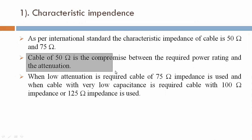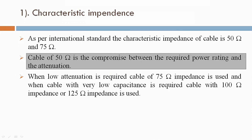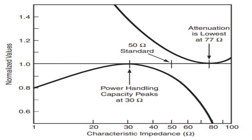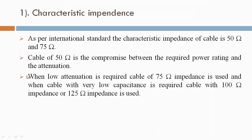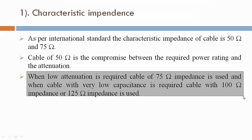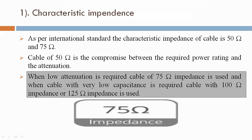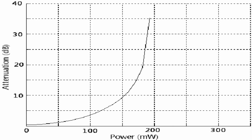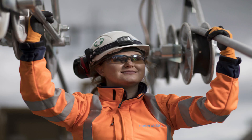Cable of 50 ohm is a compromise between the required power rating and the attenuation. When low attenuation is required, cable of 75 ohm impedance is used. And when cable with very low capacitance is required, cable with 100 ohm or 125 ohm impedance is used.